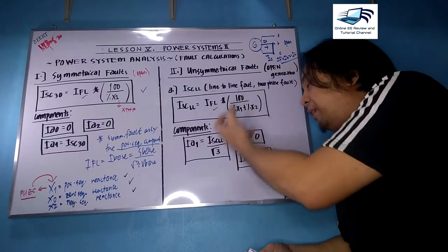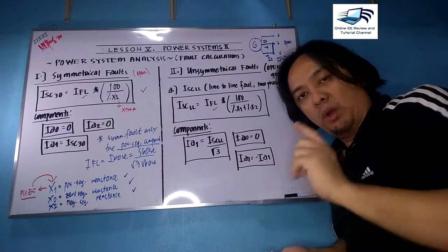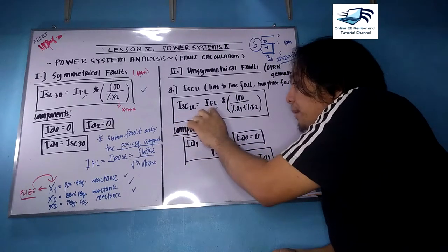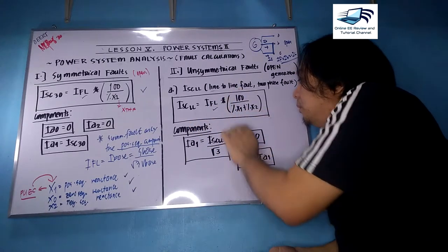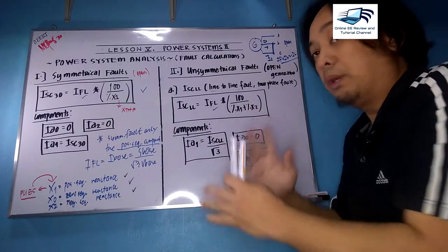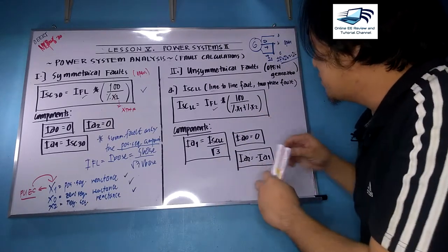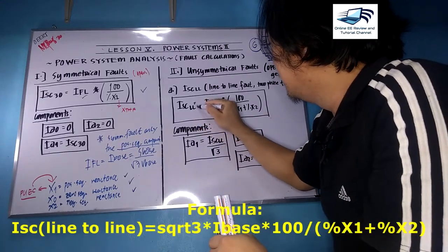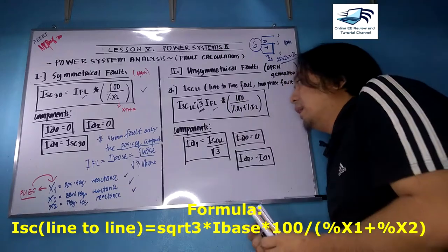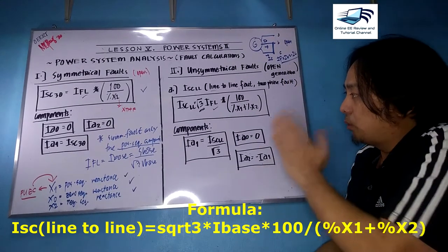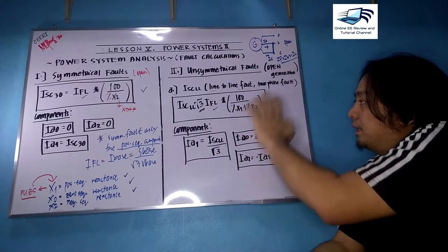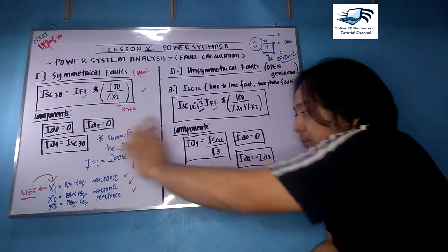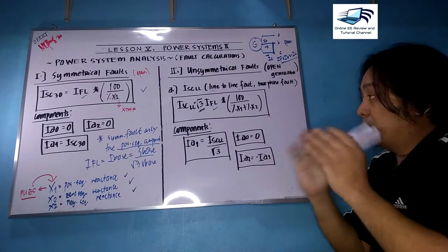Based on the derivation, ISC line-to-line is equal to the square root of 3 times the base current times 100, all over percentage X1 plus percentage X2. There is a square root of three in this formula. So ISC line-to-line equals square root of 3 times the full load current times 100 over percentage X1 plus percentage X2 — your positive and negative sequence components of the reactance.